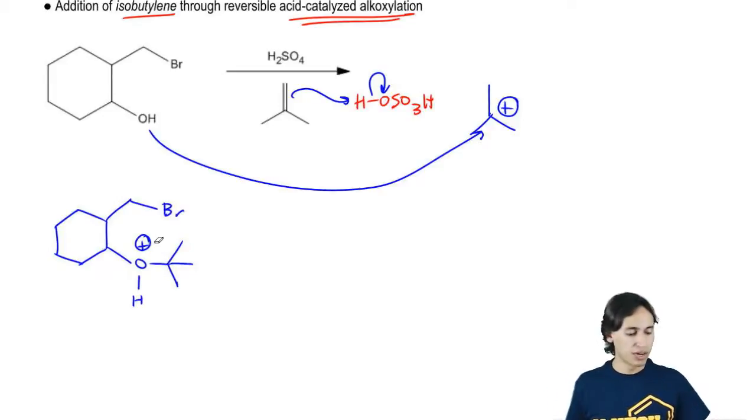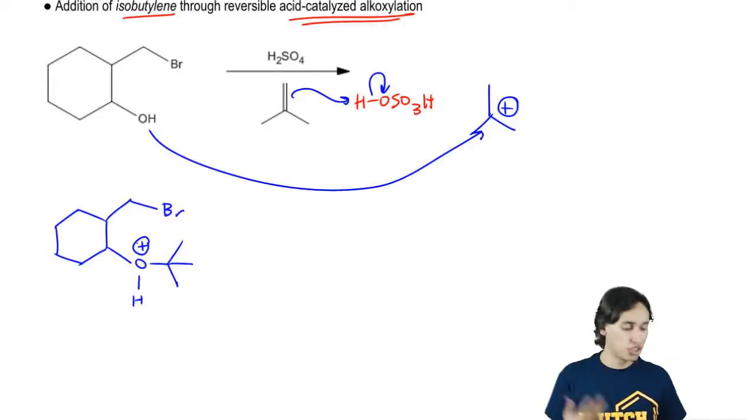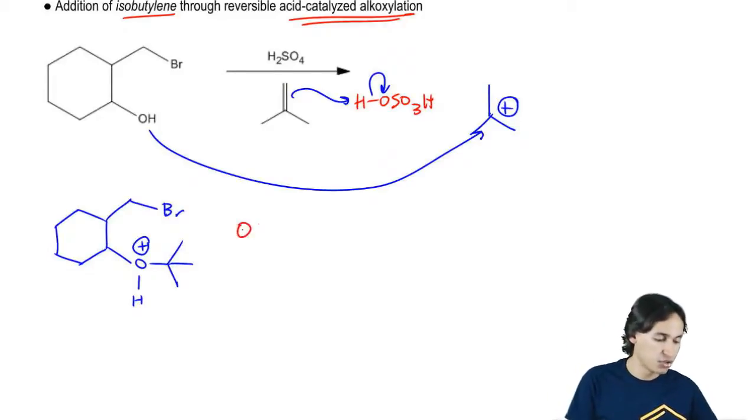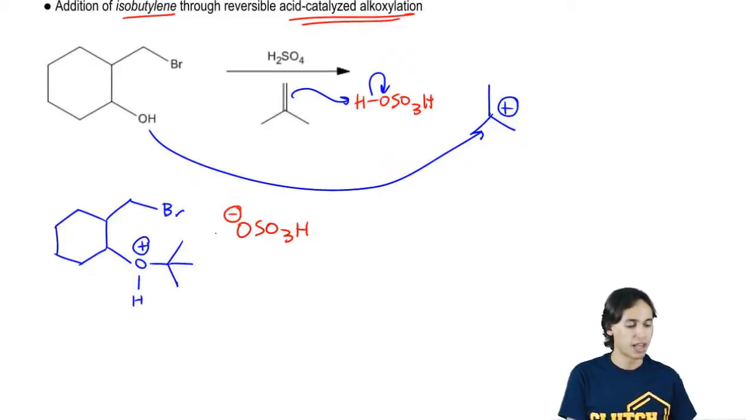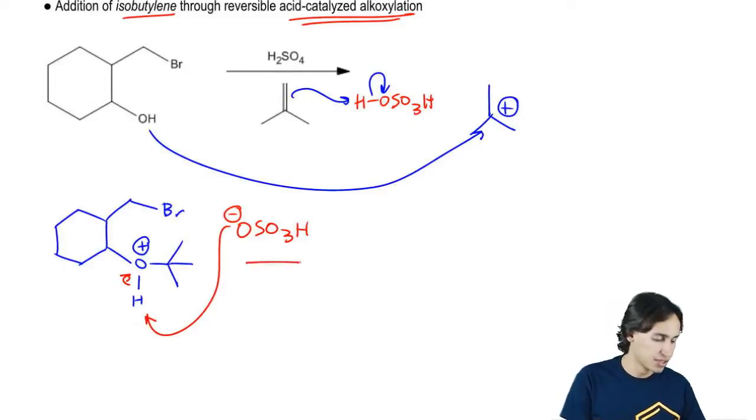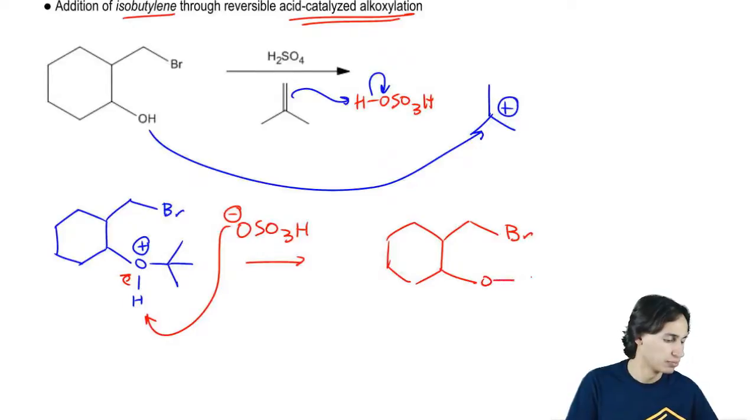Now how do you think we could get rid of that positive charge? Smart. What we could do is we could use the conjugate of my original acid. So I'm going to go ahead and use the conjugate of my sulfuric acid. I'm going to deprotonate and lo and behold, look what I've got. I now have an ether instead of an alcohol. Now why do you think this might be helpful? Having it look like that.